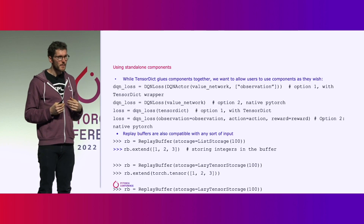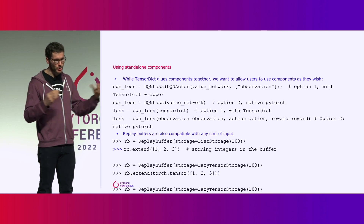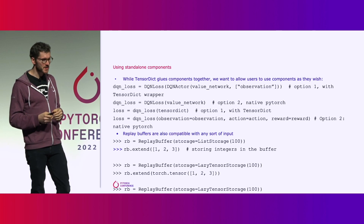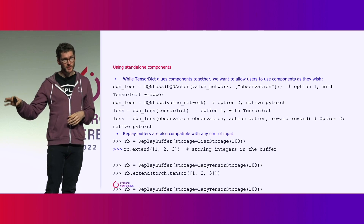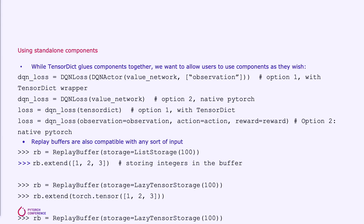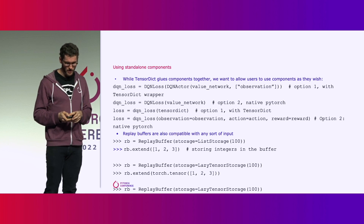We try to design modules that are easily used across different levels of user experience. For example, a DQN loss module can be used with TensorDict for full features, but a basic user with little RL experience can also use it with regular tensors — the module will handle creating the TensorDicts under the hood. Similarly, replay buffers are highly optimized for TensorDict, but basic users who just want simple usage can use them with plain tensors or even other Python objects.